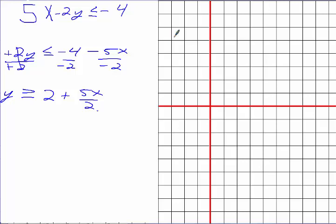When you divide by a negative, what do you do with the inequality sign? Flip it — so it goes from less than to greater than. This gives you y greater than positive 2 plus 5x over 2, and this is what we're actually going to graph. So when it comes to inequalities, isolate y — it always makes life easier. My m here is 5 over 2; m is always the number attached to x.